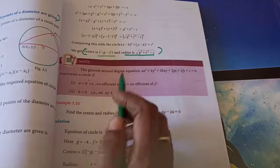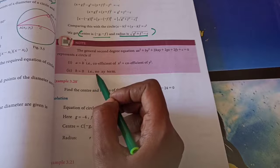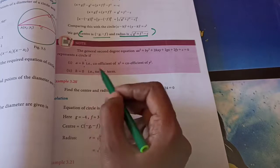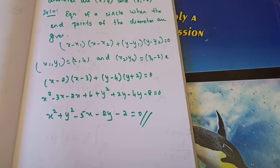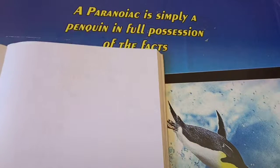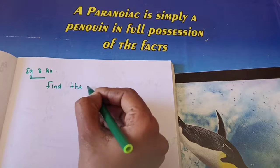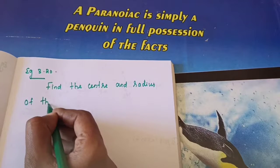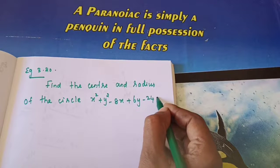The formulas you need to learn. The general second degree equation represents a circle if: coefficient of x square equals coefficient of y square (A equals B), and there is no xy term (H equals 0). If both conditions are satisfied in a problem, you can apply the general circle formula. Let's move to the next example.